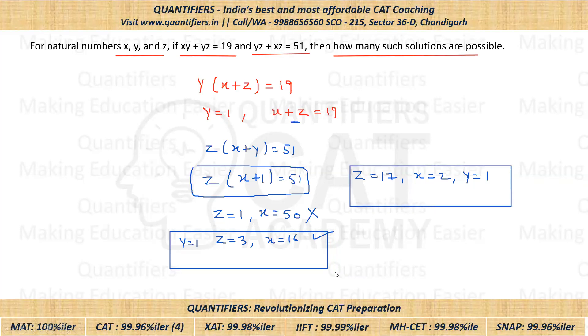And students, obviously we cannot put z as 51 because if I put z as 51, in that case x plus 1 will be 1. That means x will be equal to 0, and this is not possible because x, y, z are natural numbers. So this will not satisfy.